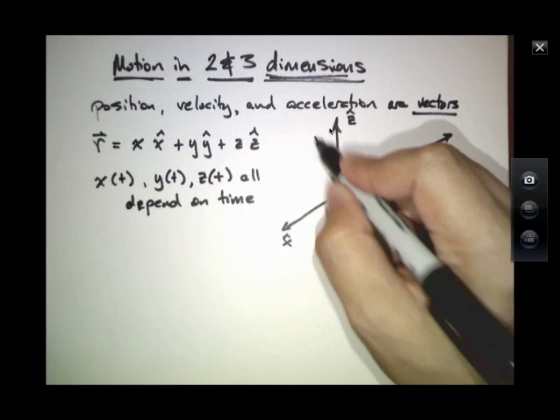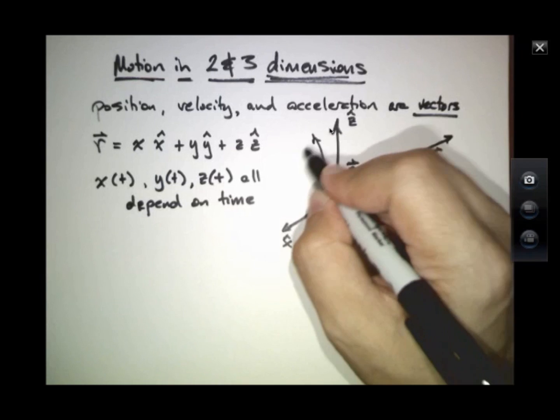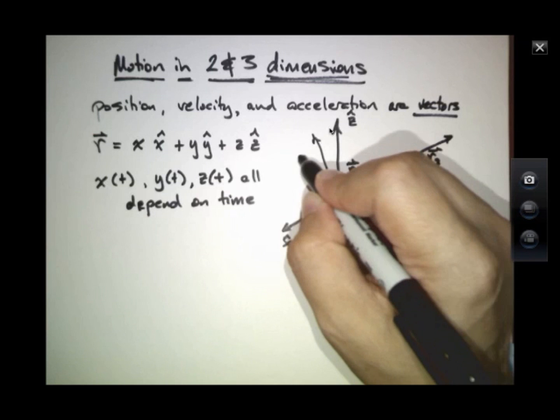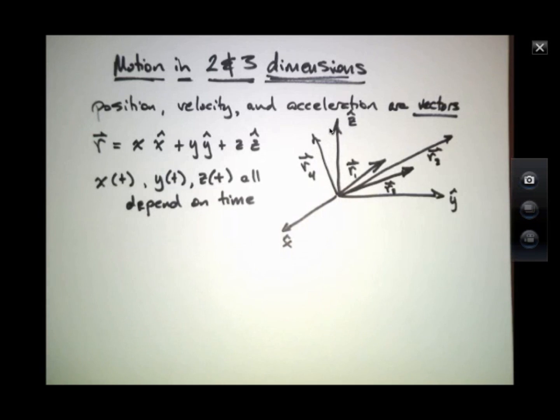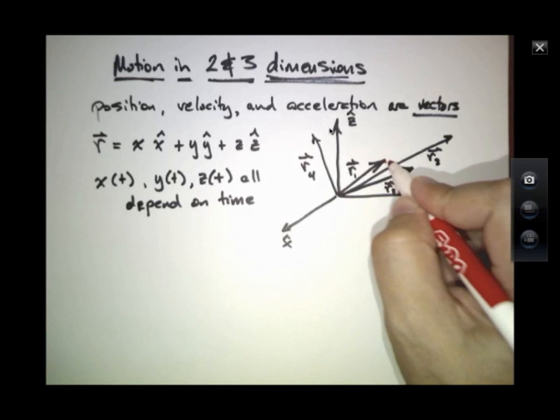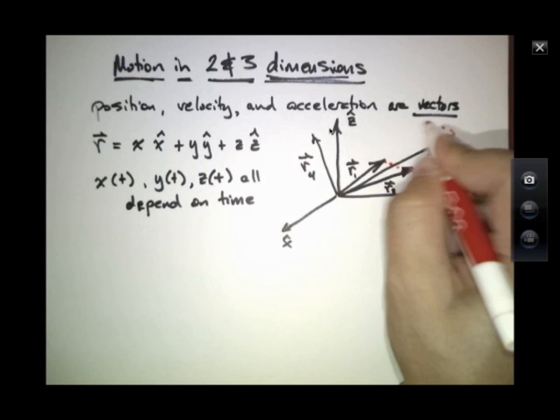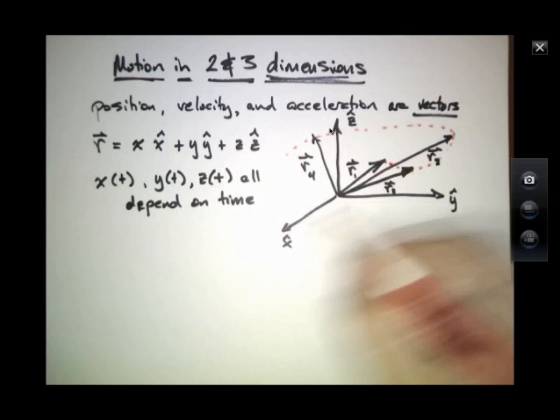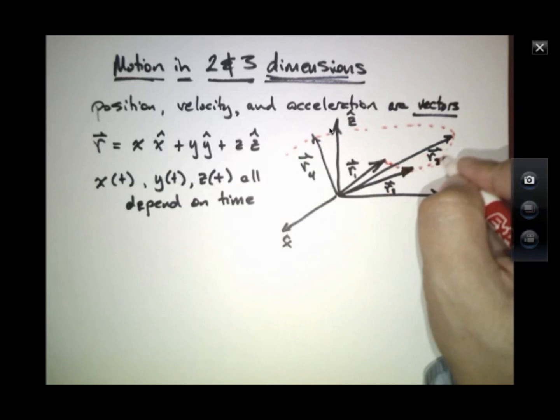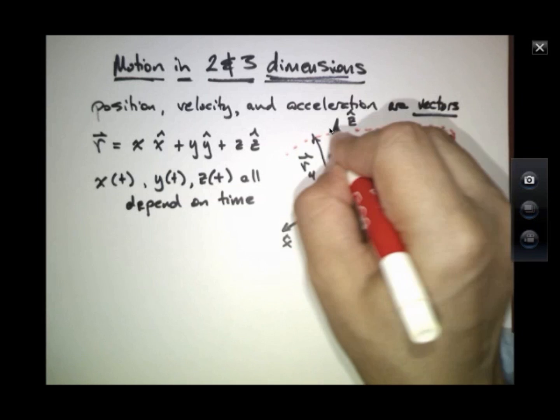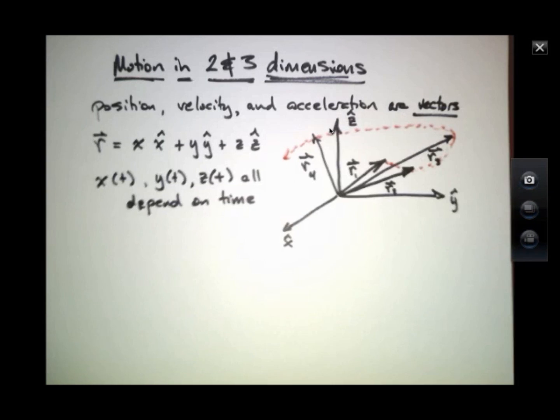And may be over here at some time t4. And we could imagine drawing in this three-dimensional space a trajectory for what this position vector is doing over time.